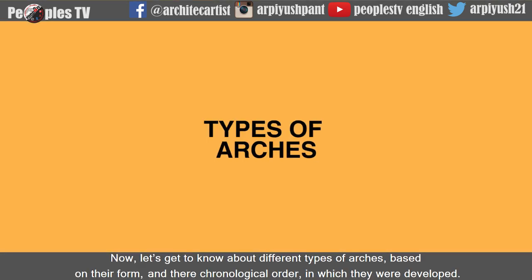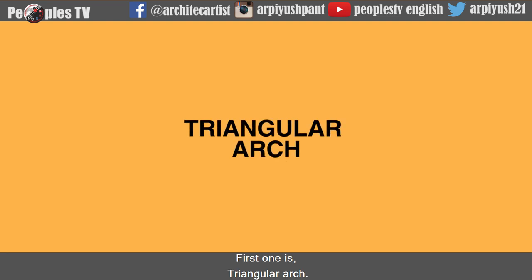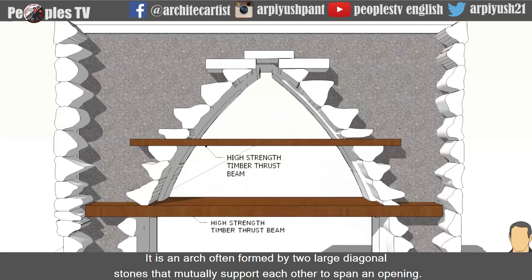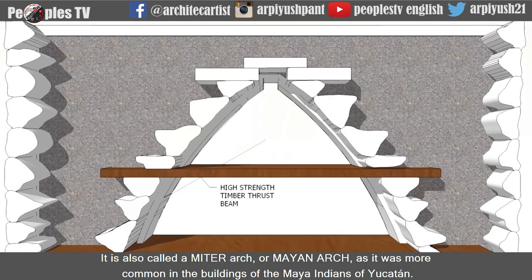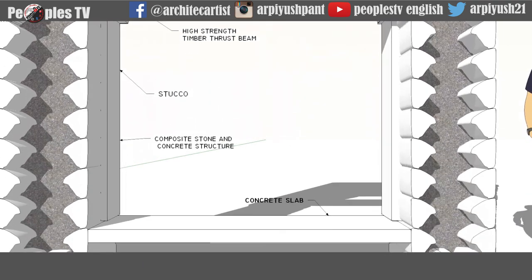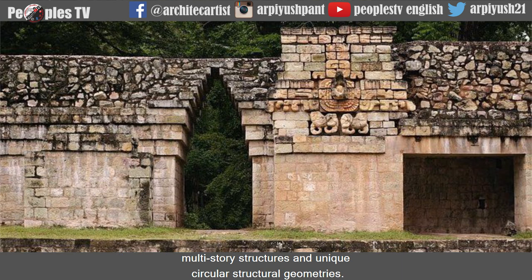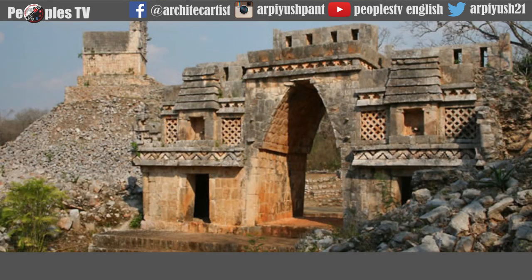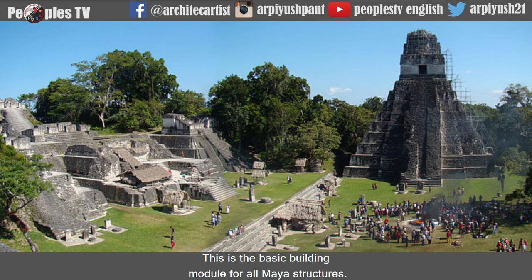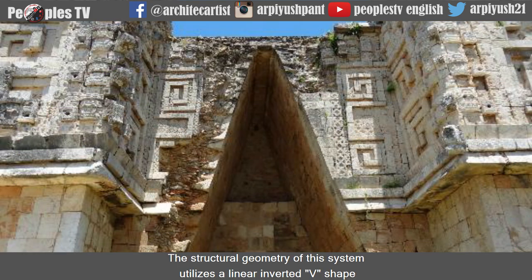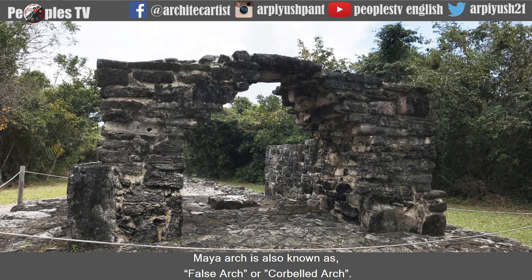Now let's get to know about different types of arches based on their form and the chronological order in which they were developed. The first one is the Triangular Arch — an arch often formed by two large diagonal stones that mutually support each other to span an opening. It is also called a meter arch or Mayan arch, as it was more common in the buildings of the Maya of Yucatan. Maya engineers developed a unique structural mechanism enabling construction of long-span interior spaces, multi-story structures, and unique circular geometries — known as the Maya arch. The structural geometry utilizes a linear inverted V shape to develop clear span in interior spaces. The Maya arch is also known as false arch or corbelled arch.